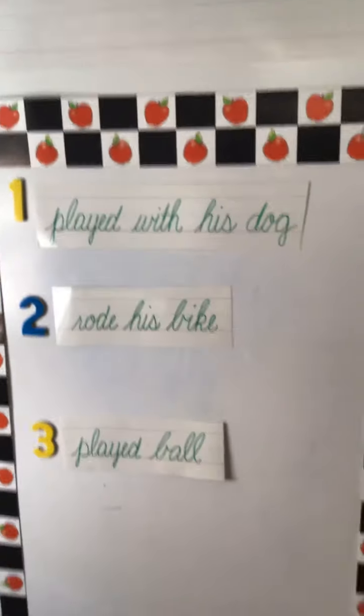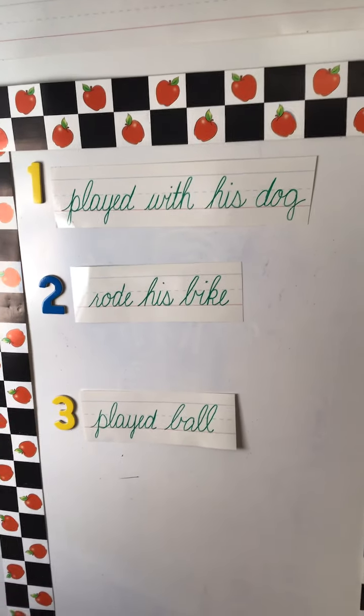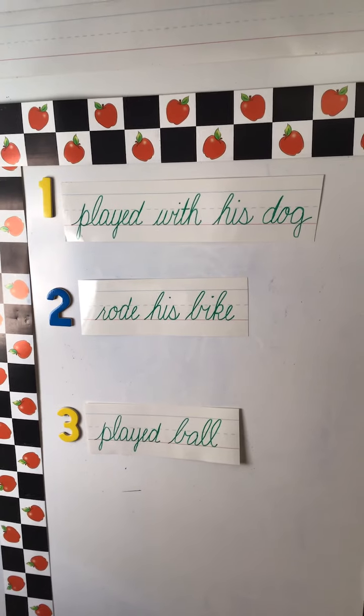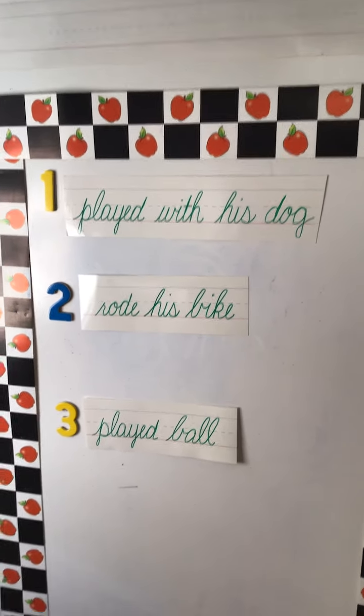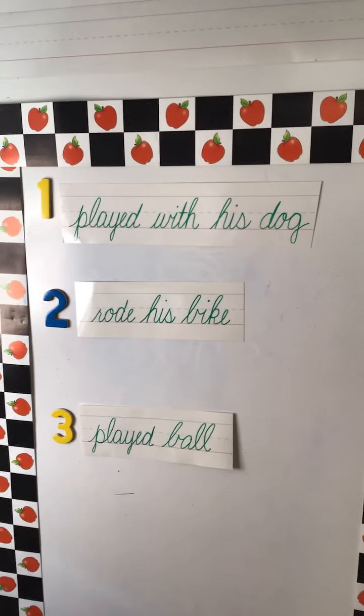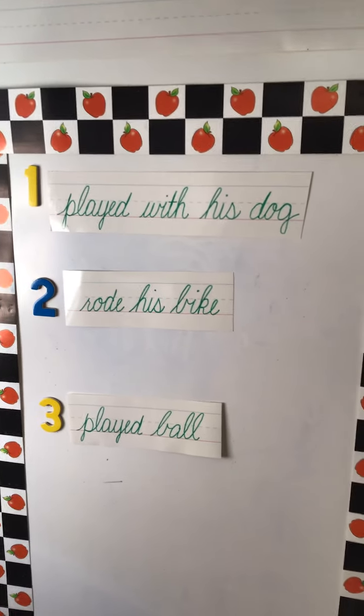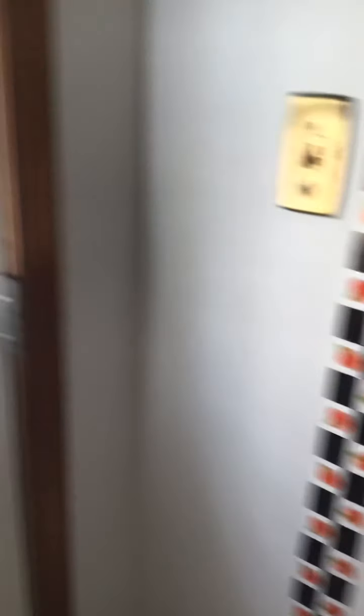Those are my phrases and that's the order I want them to appear in my story. Now I need to add some words to these phrases to make complete thoughts. I cannot just say 'played with his dog, rode his bike, played ball' — those are events that happen, but I don't know who did it, where he did it, or why he did it. Listen to this story and how I took those phrases, added some cheese to it, and made a story.